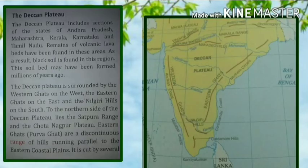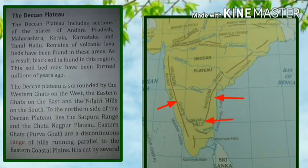The Deccan Plateau is surrounded by the Western Ghats on the west, the Eastern Ghats on the east, and the Nilgiri Hills to the south. To the northern side of the Deccan Plateau lie the Satpura Range and the Chotanagpur Plateau.